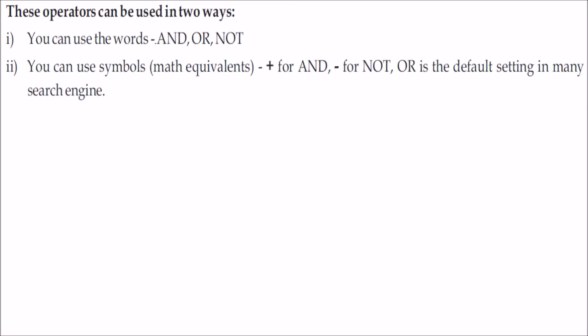These operators can be used in two ways. You can either use the words AND, OR, and NOT, or you can use symbols like plus for AND, minus for NOT. OR is the default setting in many search engines.